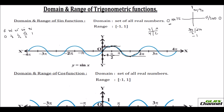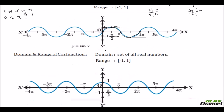You can find that the maximum value y can have is 1 and the minimum value is negative 1, so the range is from negative 1 to 1. Values beyond this are not possible. For the sine function, the domain is all real numbers and the range is [−1, 1].